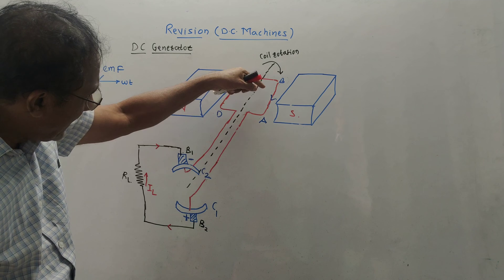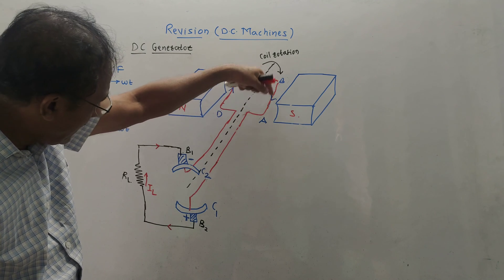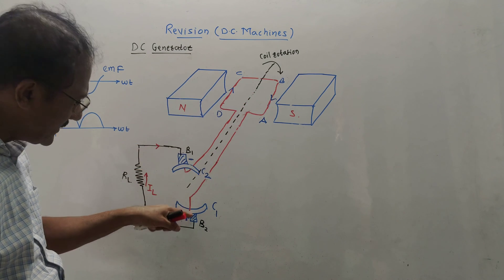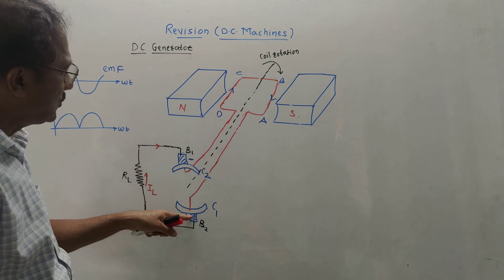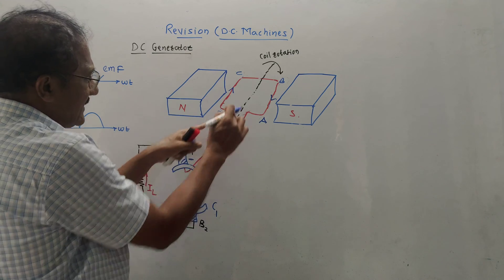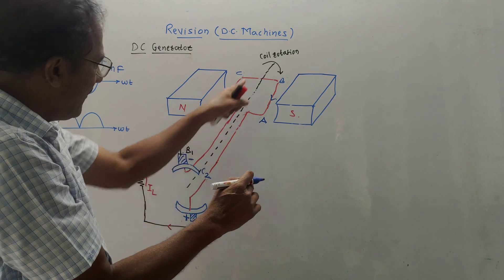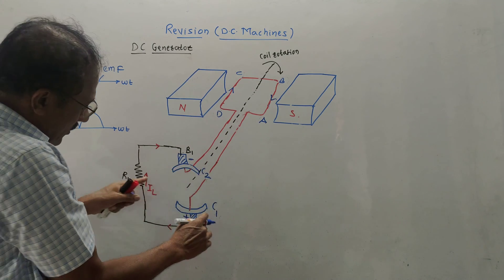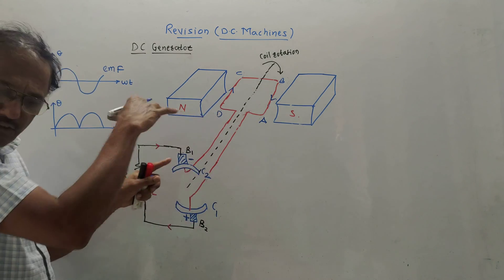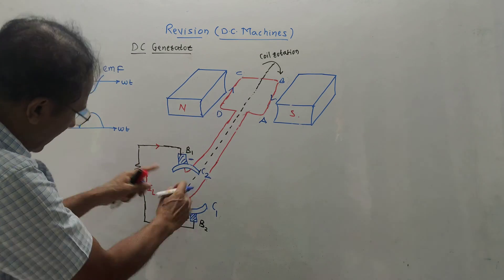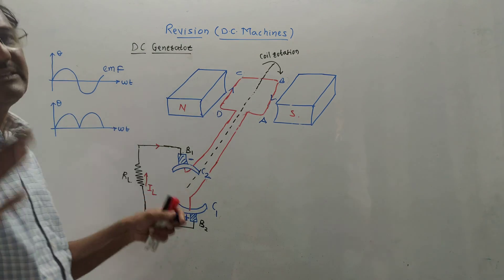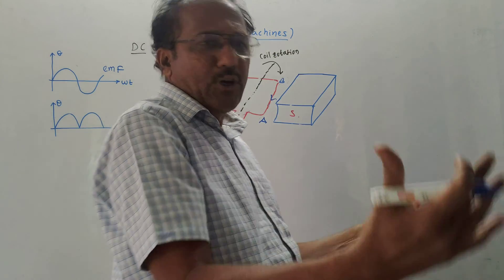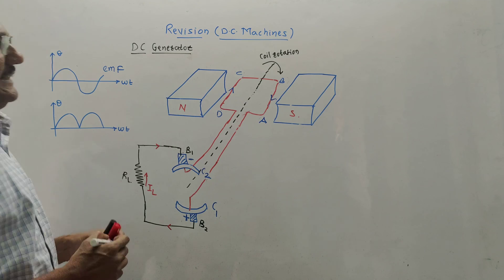Referring to the same diagram: for coil A, B, it is going towards B2, so B2 becomes positive. Whereas for CD, now connected to B1, it is moving away from commutator C2, so it becomes negative. Current flows from positive to negative, so after rotation also, the current is flowing in the upward direction.